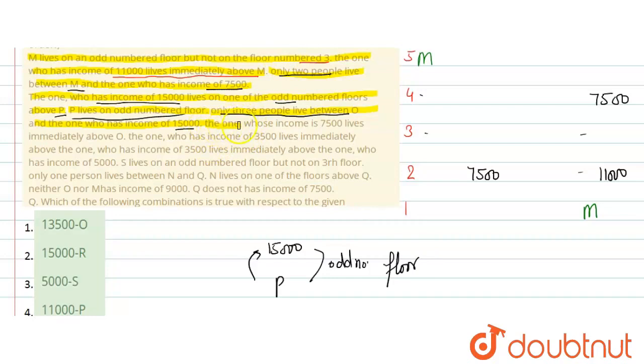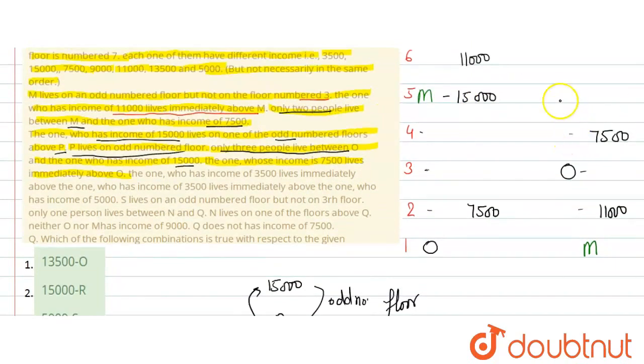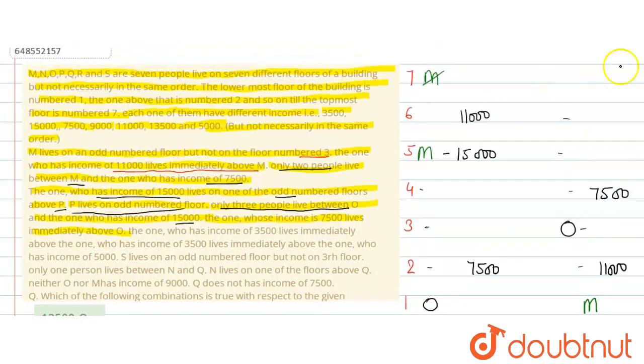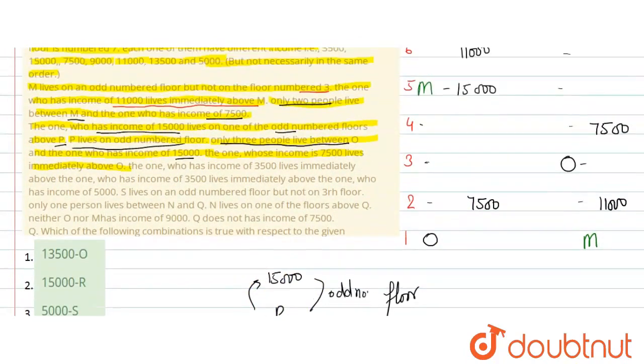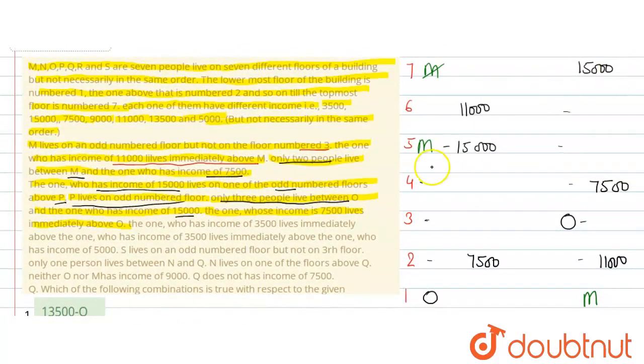Only three people between O and 15000. And next given is the one whose income is 7500 lives immediately above O. So here O comes confirmed, here O comes. In this case here O comes. And between O and 15000 there are three people. So one, two, three, here comes 15000. In this case one, two, three, on seventh floor comes 15000.